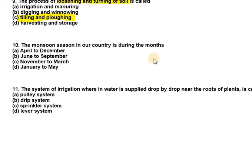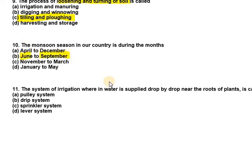Question ten: the monsoon season in our country is during the months — April to December, June to September, November to March, or January to May? The monsoon season in India persists from June to September.